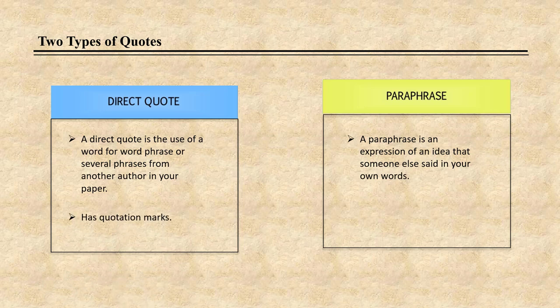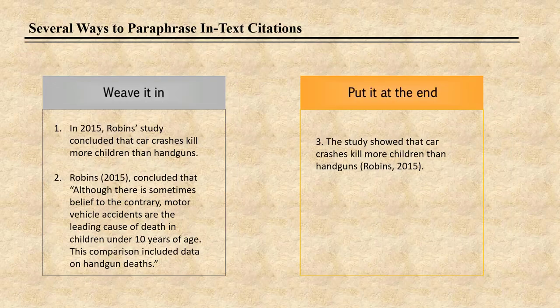A direct quote would have quotation marks around it, while a paraphrase would not. There are two ways you can use in-text citations: by either weaving the information into the text or placing it at the end. Two pieces of information are always included — the author's last name and the date.